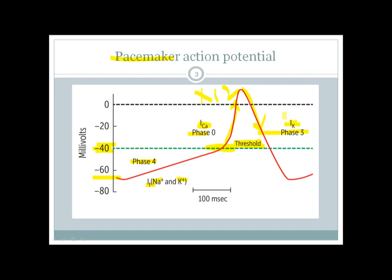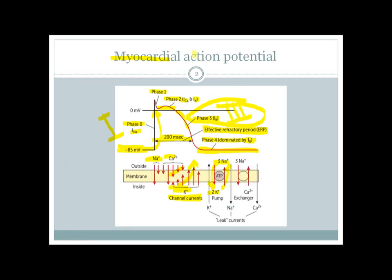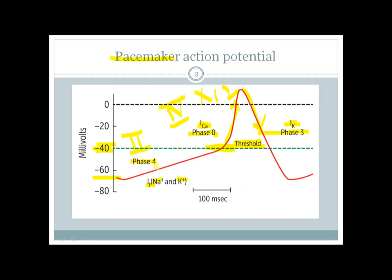The most important antiarrhythmic drugs acting on the pacemaker are class 2, which act mainly on phase 4, and class 4, which act on phase 0 by blocking the calcium channel. So calcium channel blockers — class 4 agents — act on pacemaker action potential phase 0, which is mediated by calcium influx. Class 2 blocks or delays the phase 4 funny current of the pacemaker, and class 4 blocks calcium influx in phase 0 of the pacemaker action potential.